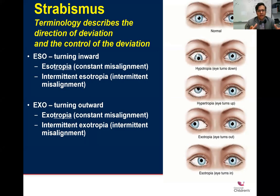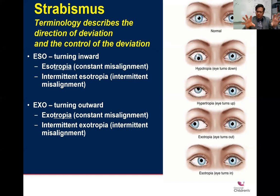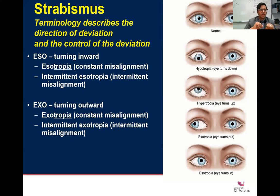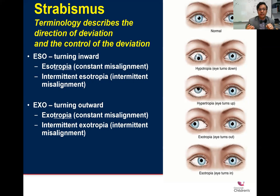In terms of binocular double vision, what we're looking for is misalignment of the eyes — we call that strabismus. There are various ways to describe strabismus. In this picture, when one eye is sitting higher in relation to the other, that's hypertropia; when it's lower, it's hypotropia; when it crosses out, it's exotropia; and inward is esotropia. These are the terms we use to describe the deviation succinctly.